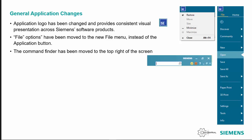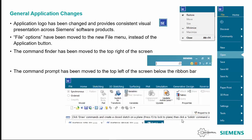The command finder has also been moved from the bottom right to the top right, and the command prompt likewise has been moved from the bottom up to the top, just below the ribbon bar on the left.